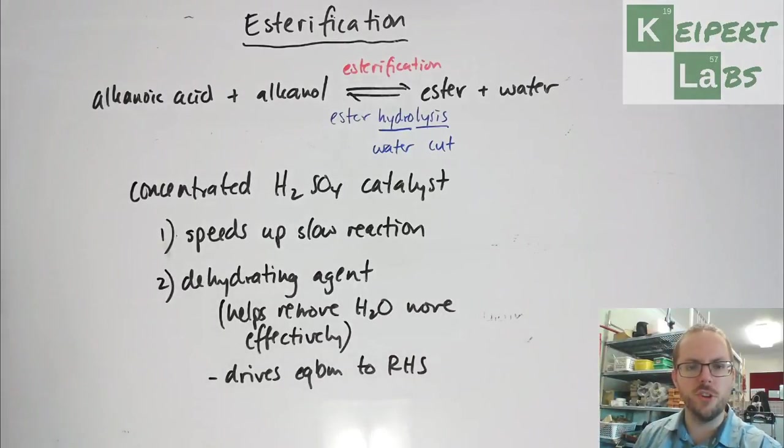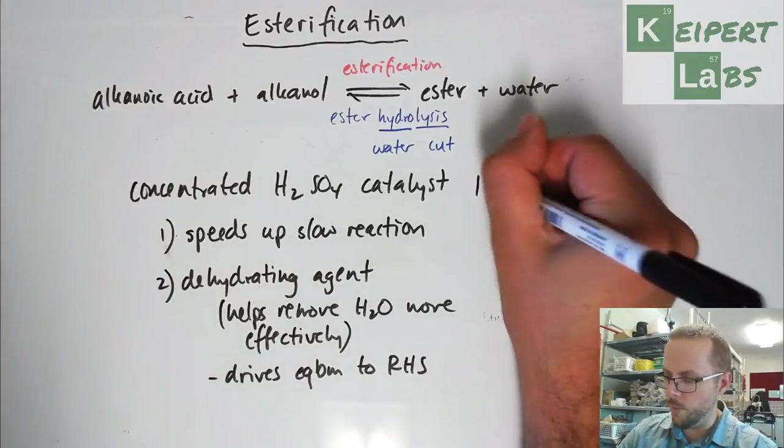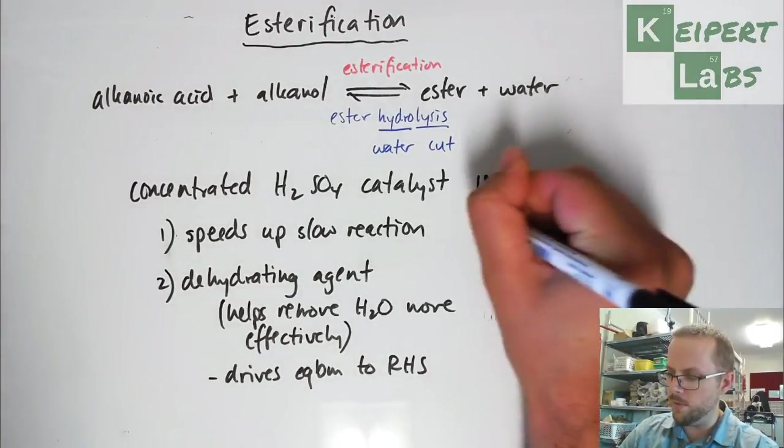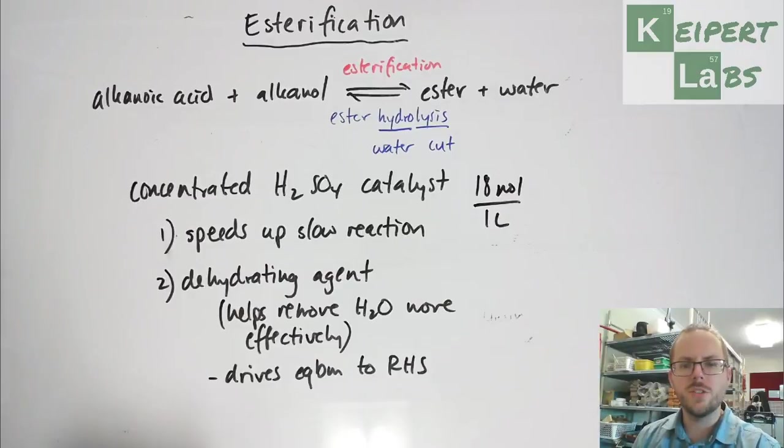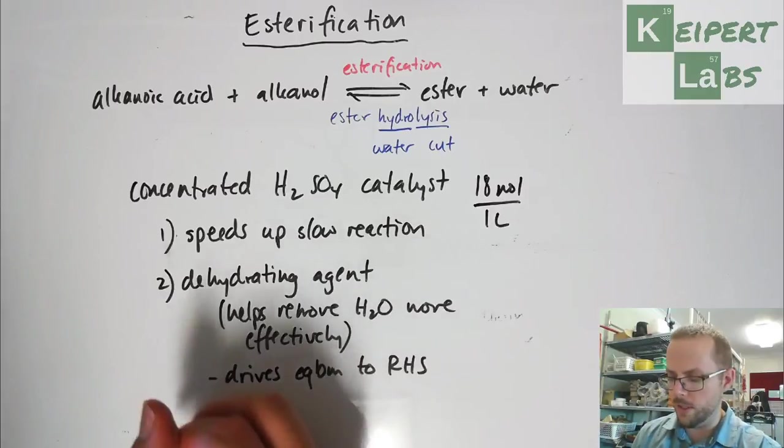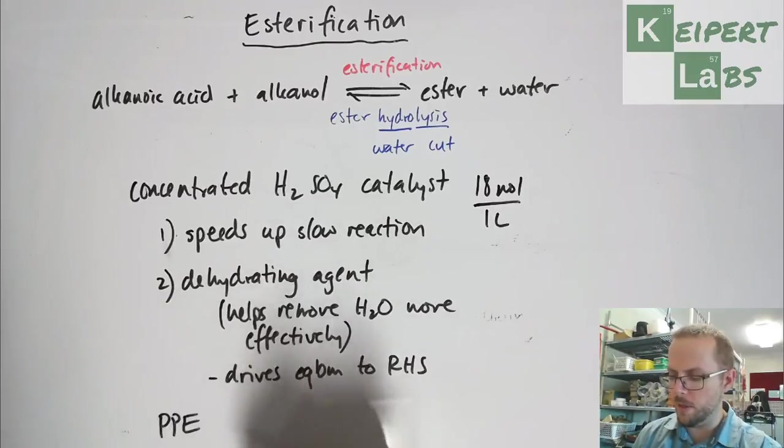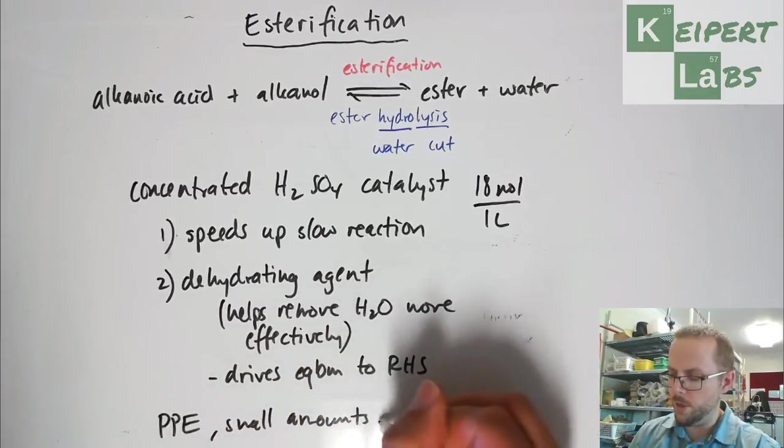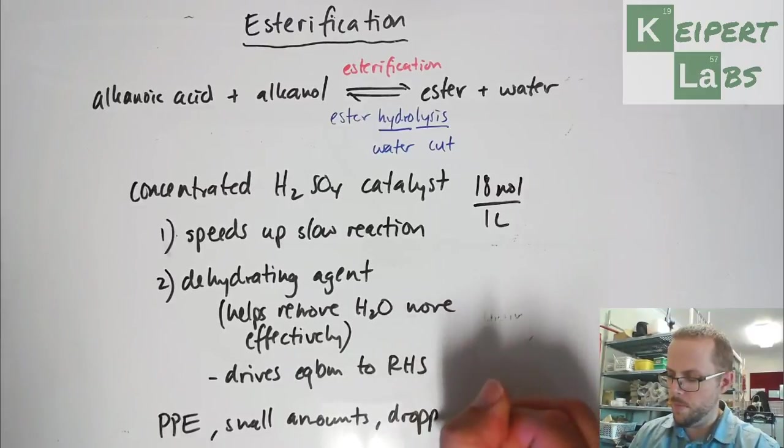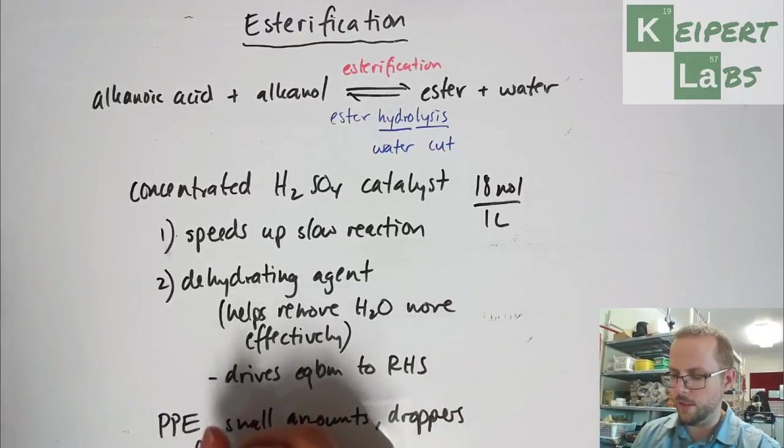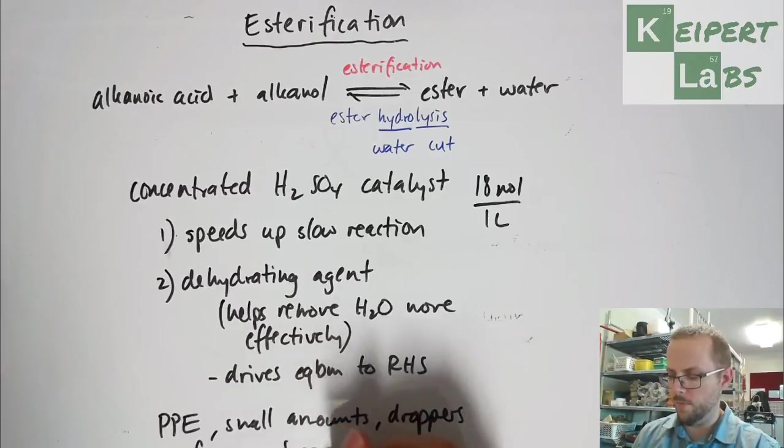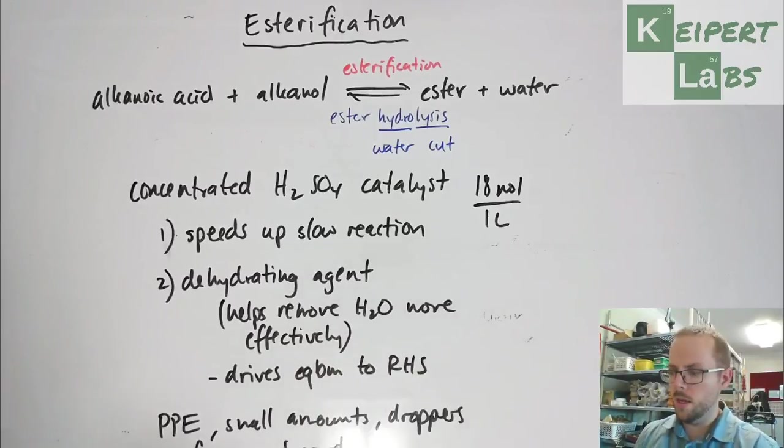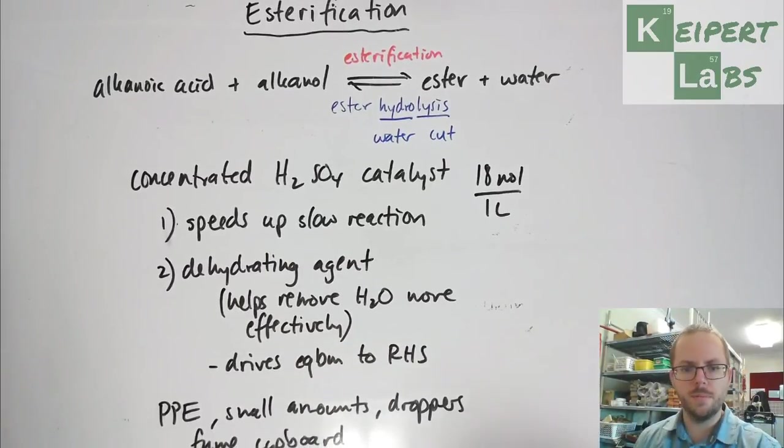So we always add a couple of drops of very concentrated sulfuric acid, so it's somewhere around about 18 moles for every one liter in concentration, super dangerous. So we only use a small amount of it. So we need to take extra safety precautions when we use it. So we'd be using our personal protective equipment. We're using small amounts, so a couple of drops we're using droppers. We're also probably carrying things out in a fume cupboard to minimize our exposure. Because otherwise it will give you a very nasty burn.